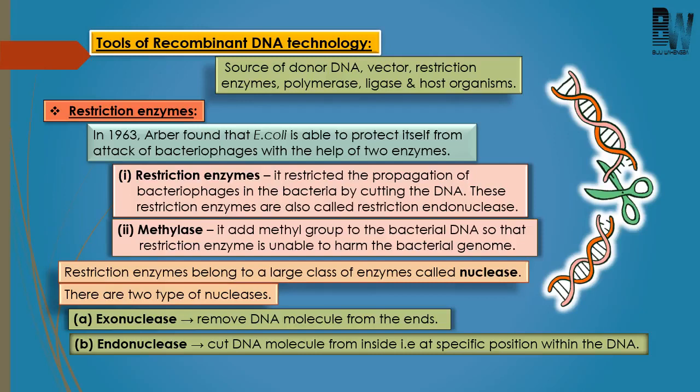The donor and host organisms do not require any further discussion. For DNA ligase and polymerase, we will study those in Chapter 6, but I will give you all the important points related to them here. For this chapter, among the tools, we are going to discuss only two: restriction enzyme and vector. And for today's video class, we will discuss only restriction enzyme.